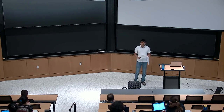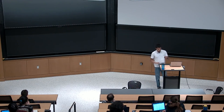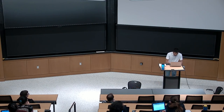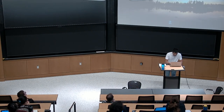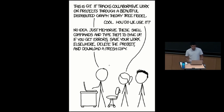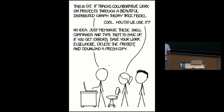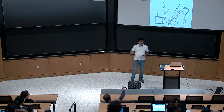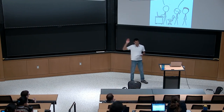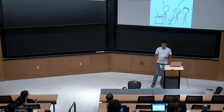There are a number of version control systems out there, and Git has become the de facto standard. There's an XKCD comic that illustrates Git's reputation. It reads: 'This is Git. It tracks collaborative work through a beautiful distributed graph theory tree model.' 'Cool, how do we use it?' 'No idea. Just memorize these shell commands and type them to sync up. If you get errors, save your work elsewhere, delete the project, and download a fresh copy.' Raise your hand if you've ever done this. The goal of this lecture is to make it so you don't have to do this anymore.